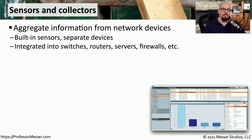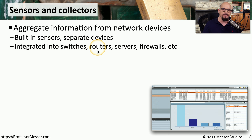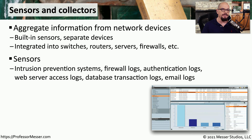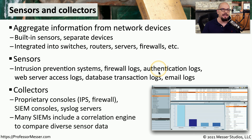If you are managing a large network, you've certainly installed sensors and collectors. There needs to be some way to take all the important statistics gathered by all the devices on your network — switches, routers, servers, firewalls, and other devices — and centralize them into one point. The sensor usually goes on the device itself, such as part of your intrusion prevention system, firewall, authentication server, or web server. All of these sensors gather information and provide it to the collector.